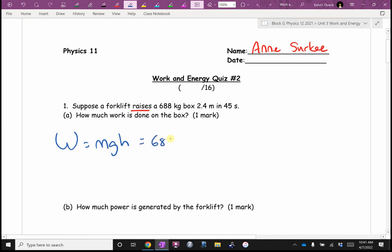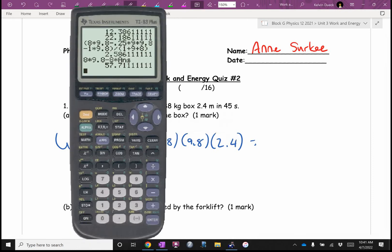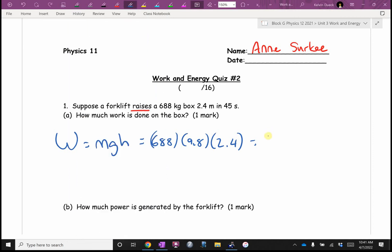It's going to be 688 times 9.8 times 2.4. I get 16,181. I'll write 16,200 joules of work.